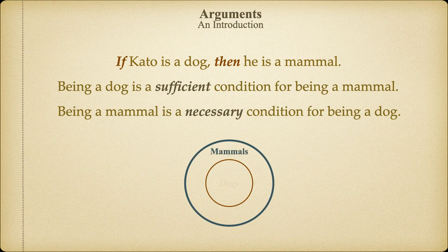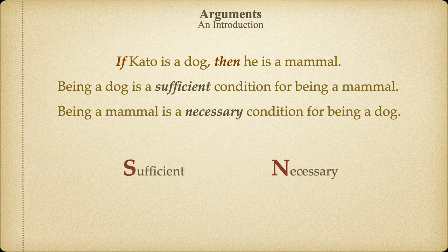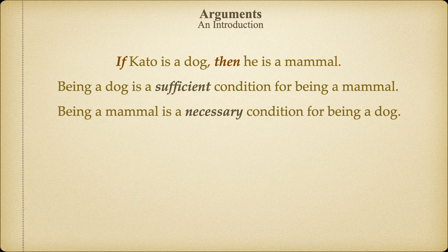The parts of a conditional statement demonstrate these two relationships to one another. The antecedent of a conditional statement is a sufficient condition for the consequent, and the consequent forms a necessary condition for the antecedent. For example, 'if Cato is a dog, then he's a mammal' says that being a dog is sufficient for being a mammal, and being a mammal is necessary for being a dog. A diagram shows all dogs inside the mammal circle — you couldn't be a dog unless you were also a mammal. To remember the order: sufficient, then necessary — 'the sun.' The antecedent is the sufficient condition; the consequent is the necessary condition.